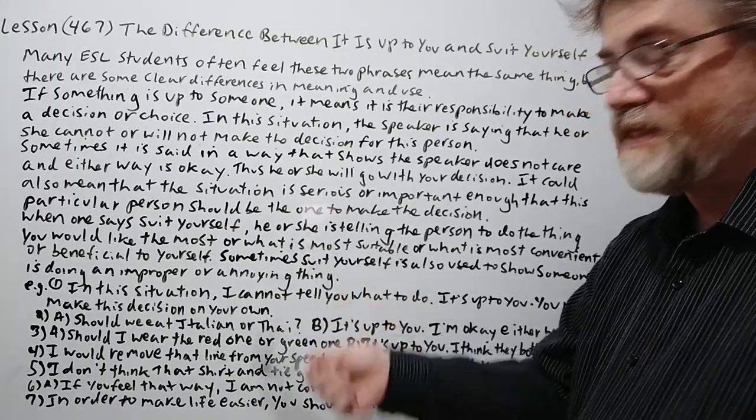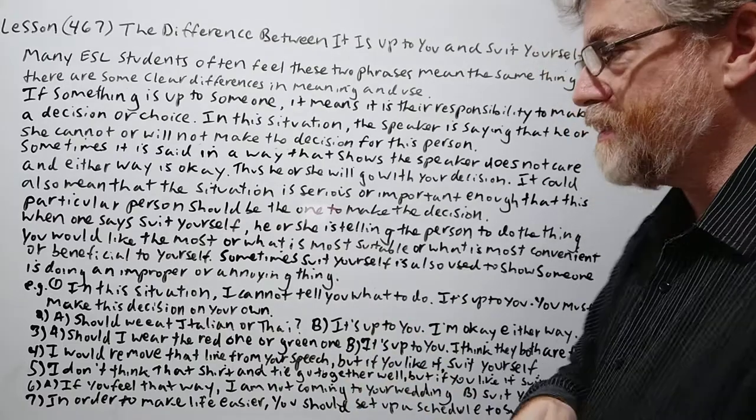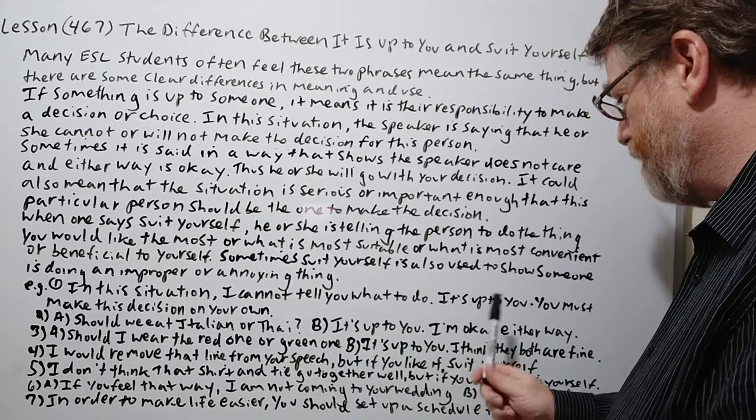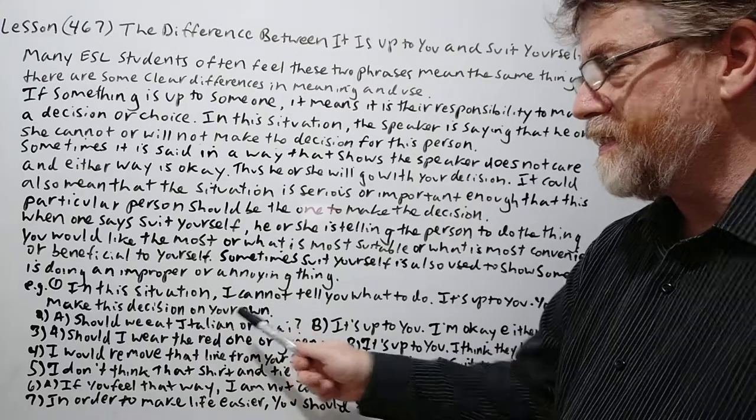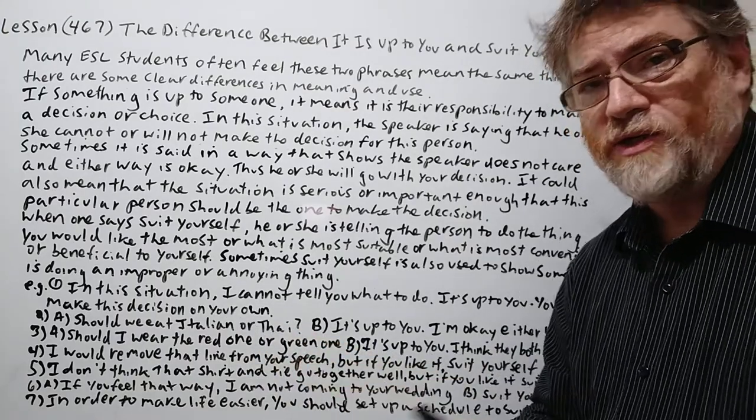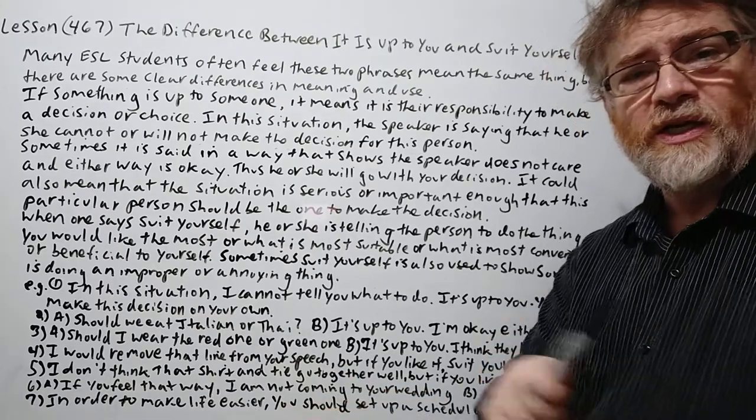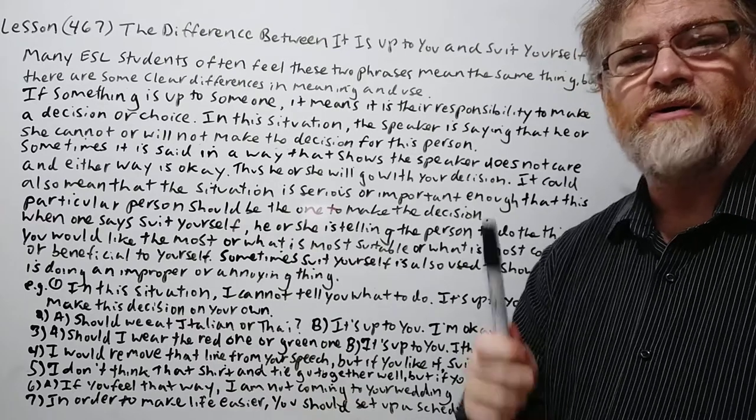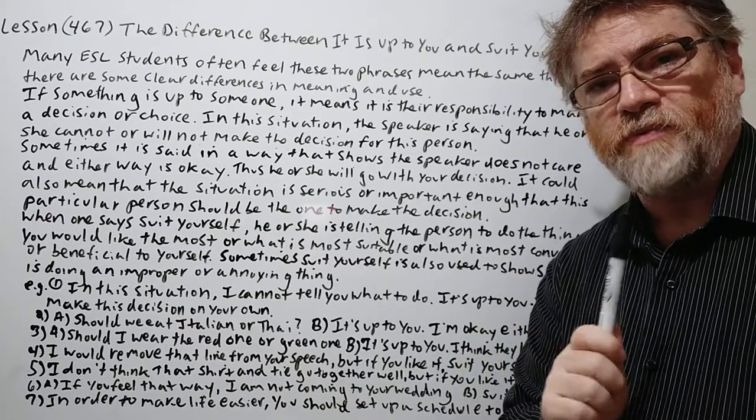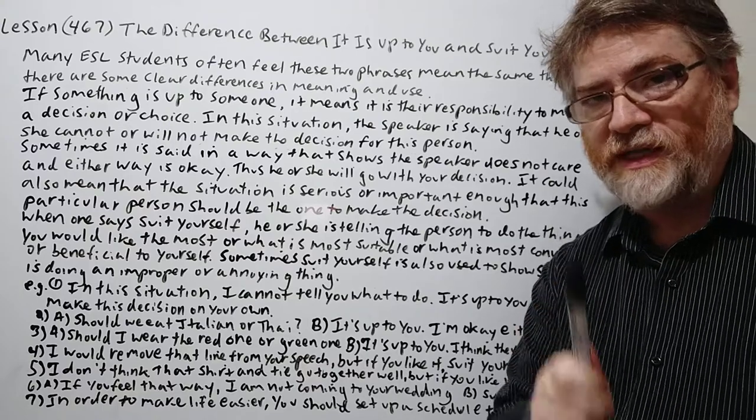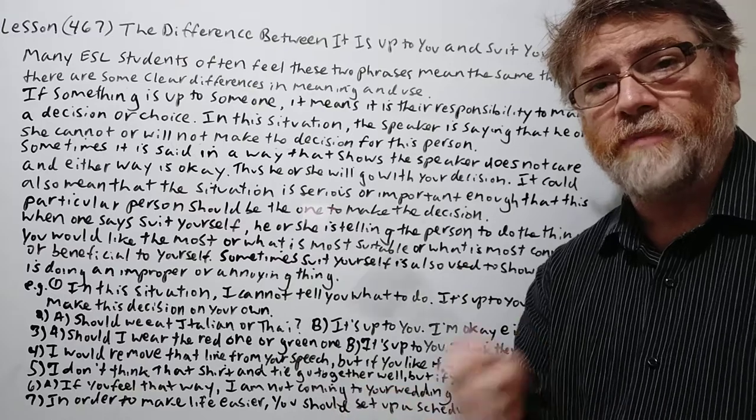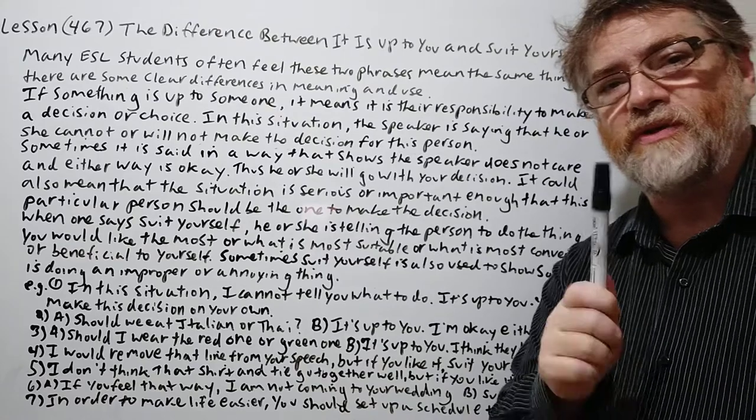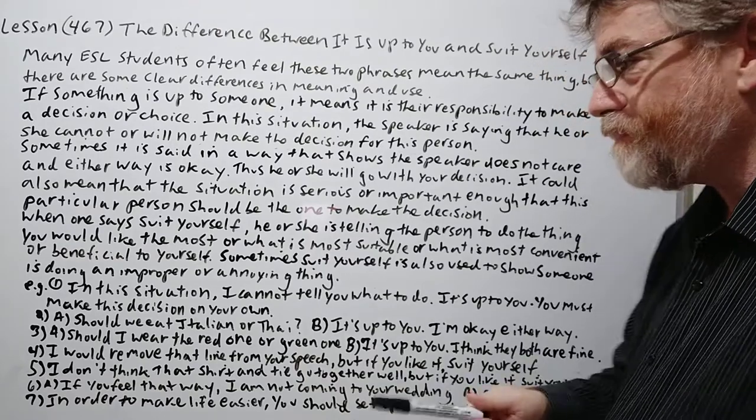Let's give several examples. We got seven examples here to cover both of these ideas. Here's the first one. In this situation, I cannot tell you what to do. It's up to you. You must make this decision on your own. Maybe a woman said, should I divorce? Should I leave my husband? Or should we break up? Should I end my career? But in this case, the other person's probably thinking it's too important. I can't really make this decision for you. And maybe you shouldn't because if you did make the decision and later on she regretted it, she'd probably blame you. So this is one where the person really should make the decision on their own.